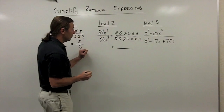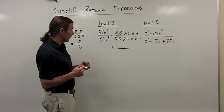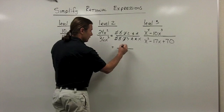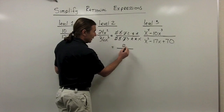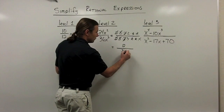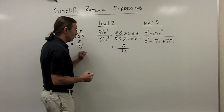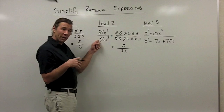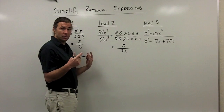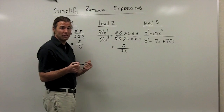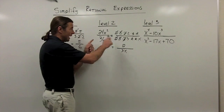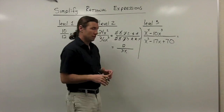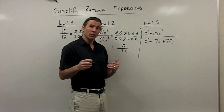Let's take a look at what we have left. In the numerator I just have 2. In the denominator I have 3 times x, or just 3x. So I have simplified this level 2 rational expression doing exactly the same thing — factor everything out, divide out the common factors.